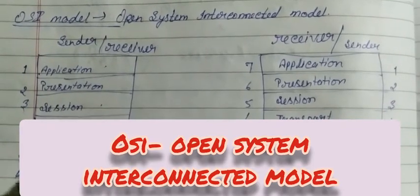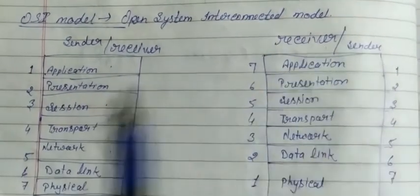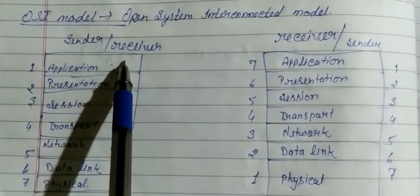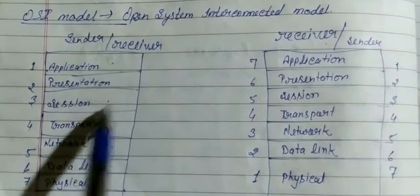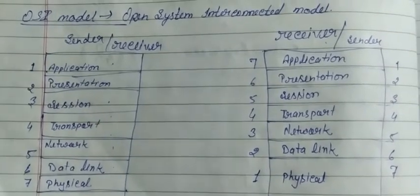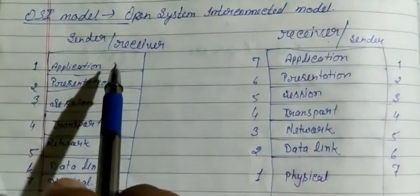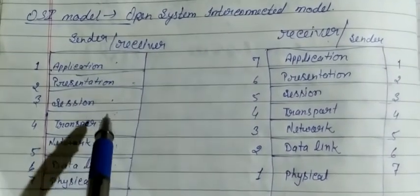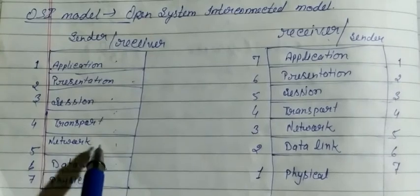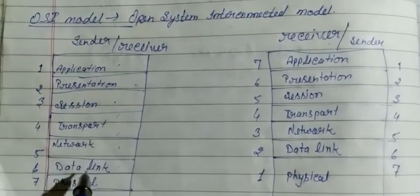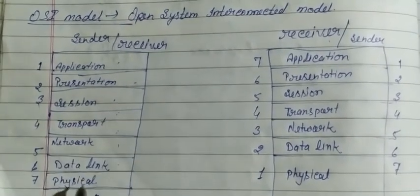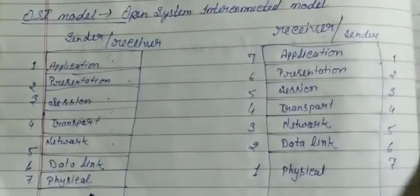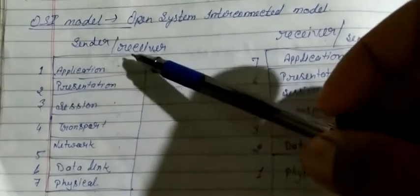OSI model mein ek sender hota hai aur ek receiver hota hai. Sender jab koi data transfer karta hai, to uska message in saat layers se hokar jaata hai. First: Application layer, second: Presentation layer, third: Session layer, fourth: Transport layer, fifth: Network layer, sixth: Data link layer, aur seventh: Physical layer.